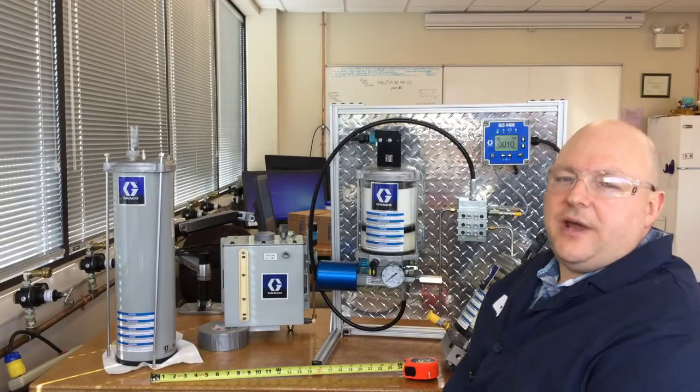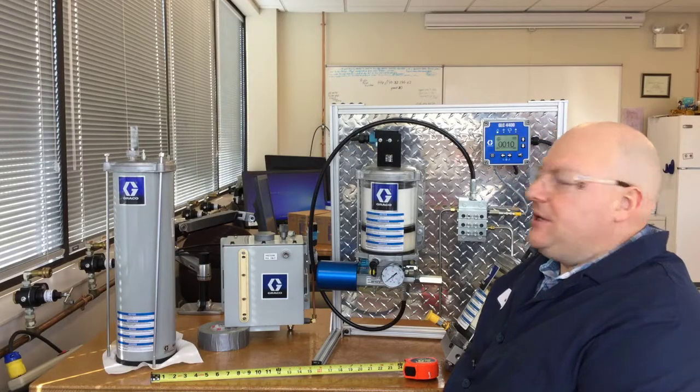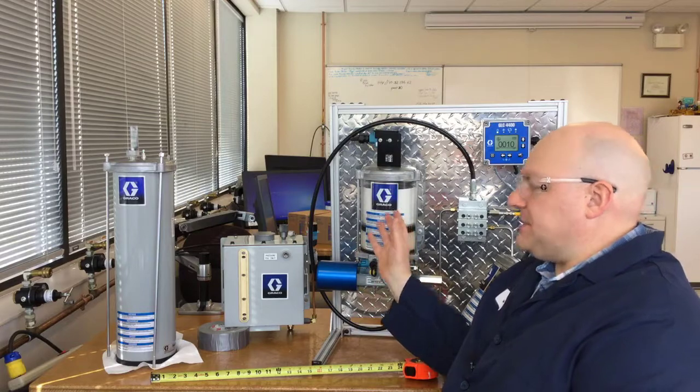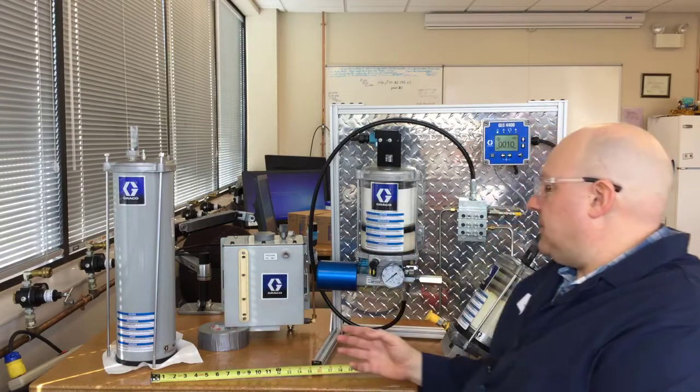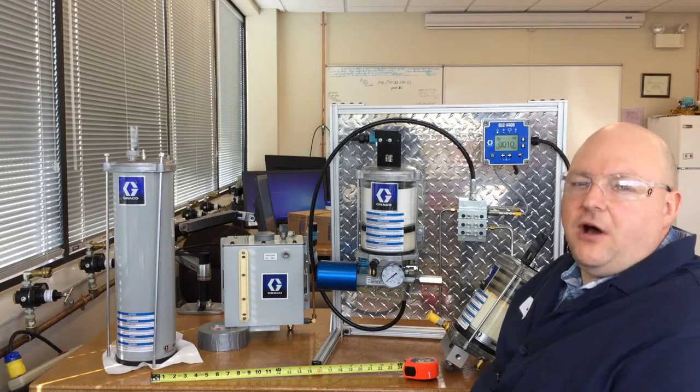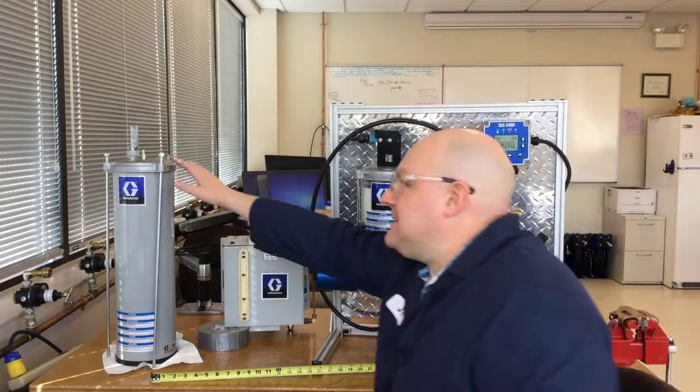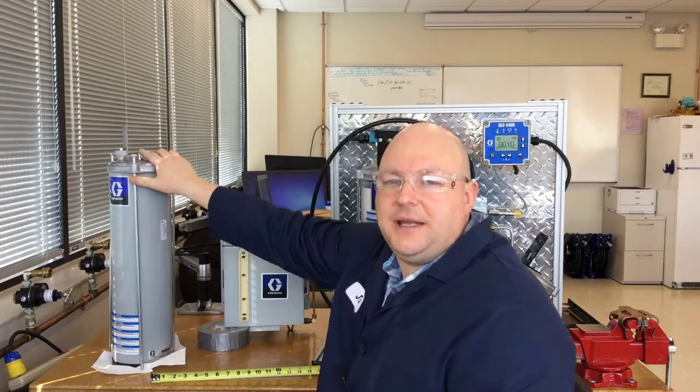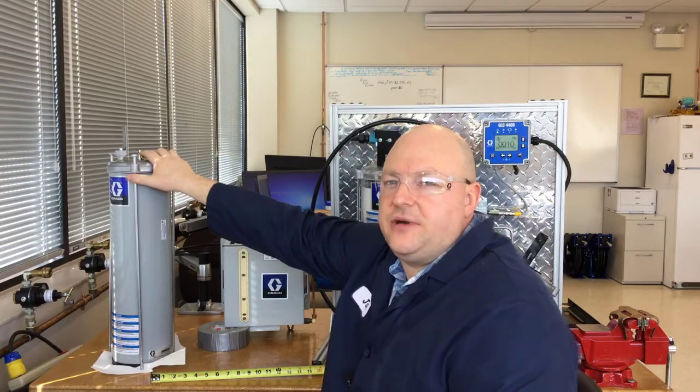On the cylindrical reservoirs, we offer them in two different diameters. The most common one is what you see here, the six inch diameter, but there's also a four inch diameter. The four inch diameter will be around a foot tall, and if it has this assembly on top and a follower plate inside, then that's a five pound grease reservoir.